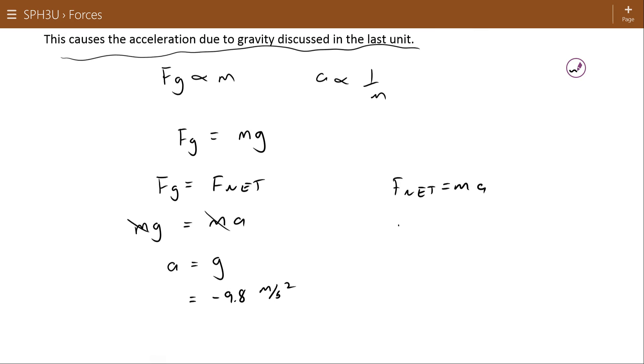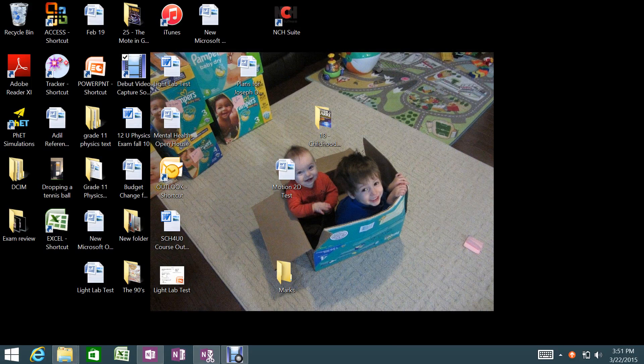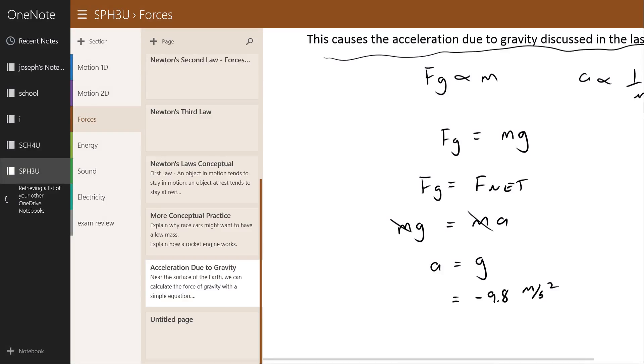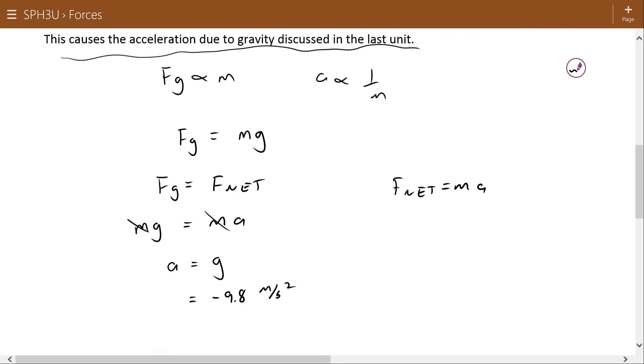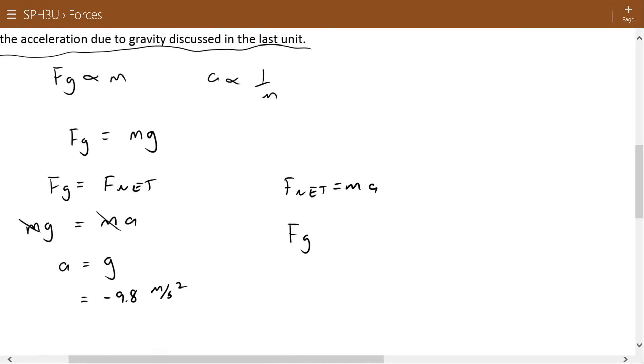Conceptually the force of gravity goes up as mass goes up, acceleration goes down. Force of gravity goes up as mass goes up, acceleration goes down as mass goes up. And so this up and this down cancel each other out. And acceleration remains the same.